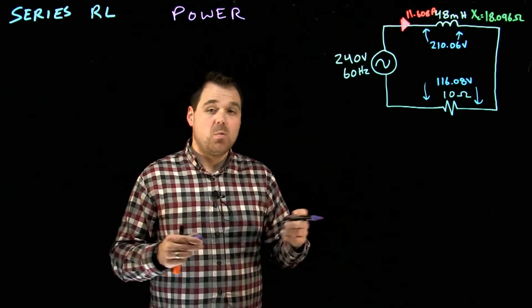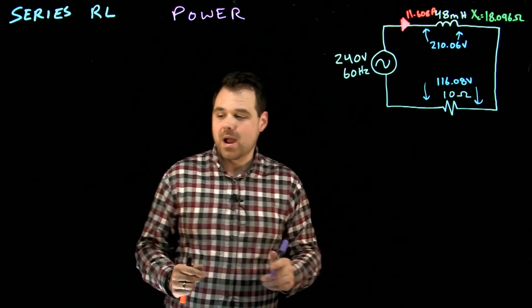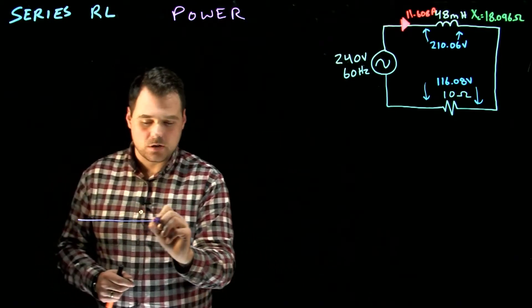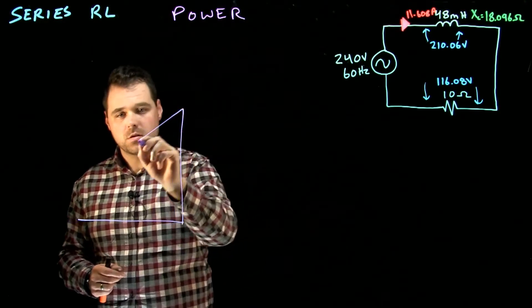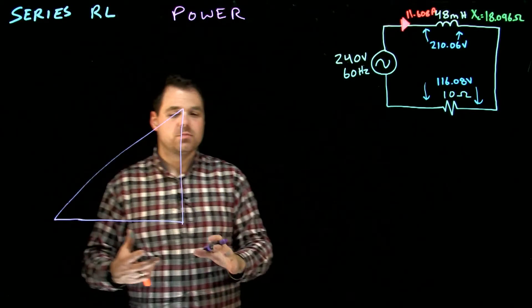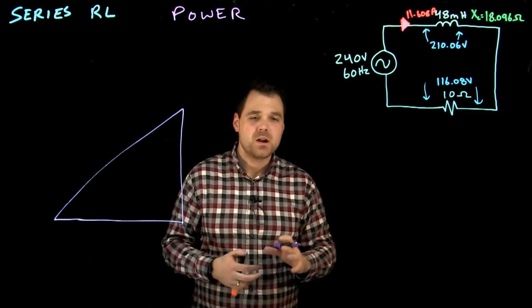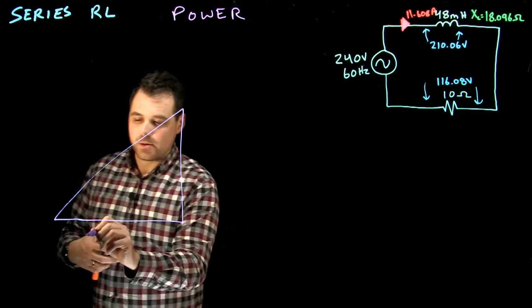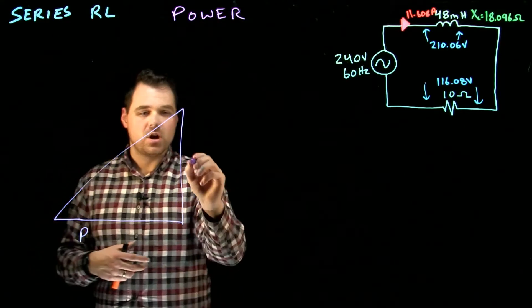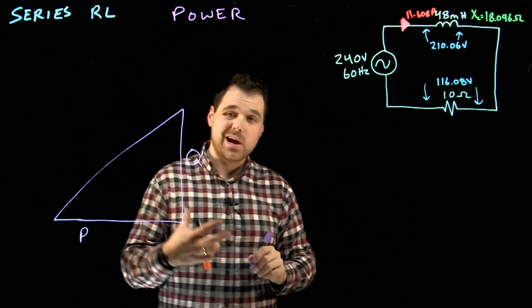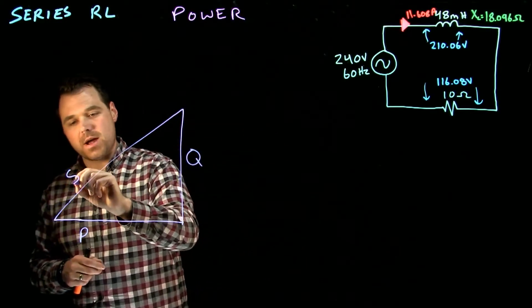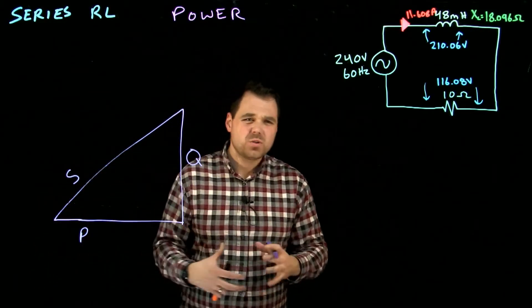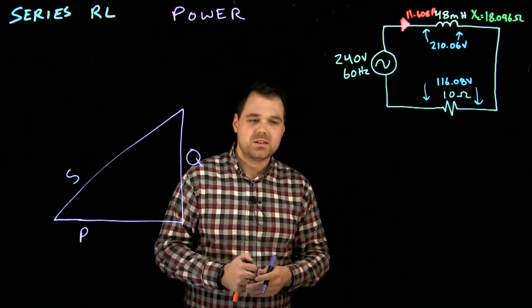Well with power what I want to do is I want to put it onto a power diagram. In this case a power triangle. So I'm going to use a power triangle. I know that I've got true power on the bottom and I've got quadrature power on the side or reactive power. Active and reactive and then I also have my apparent power. So we're going to talk about a couple ways to get these things.